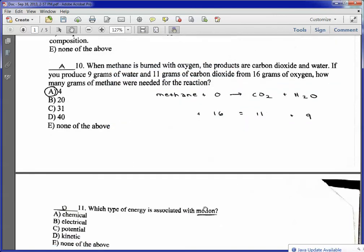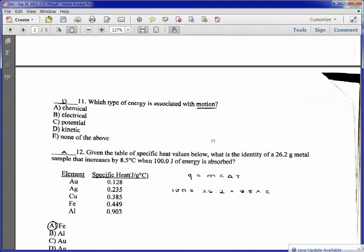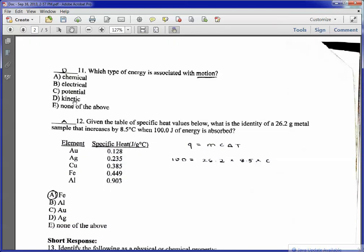Which type of energy is associated with motion? That's kinetic energy. Remember, potential energy has to do with an object's position.